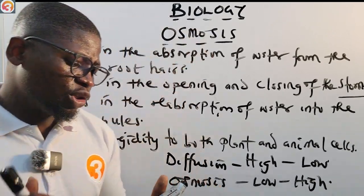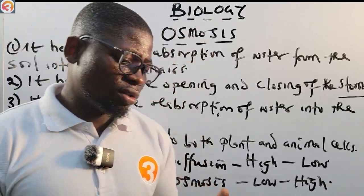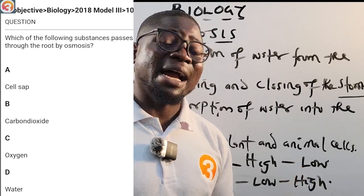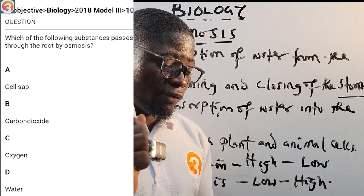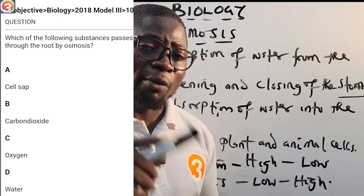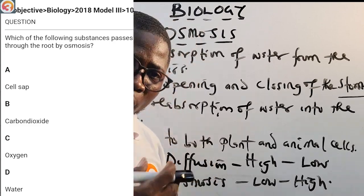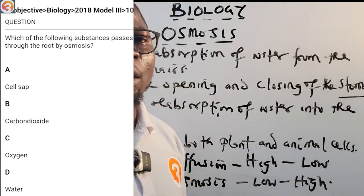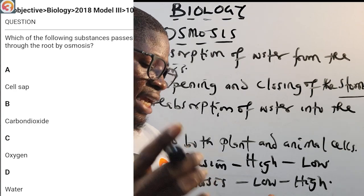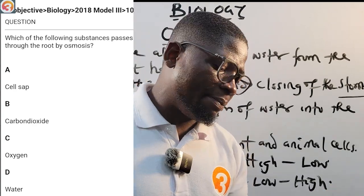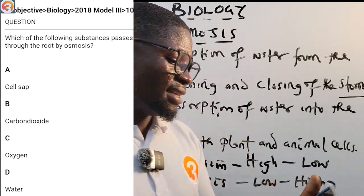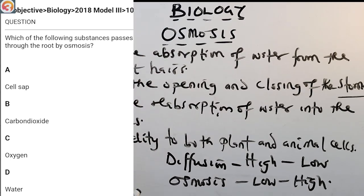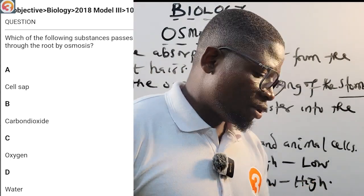Next, 2018 question number 10: which of the following substances passes through the roots by osmosis? A, cell sap; B, carbon dioxide; C, oxygen; D, water. The correct answer is D — water. Water gets from the soil to the root of a plant by osmosis.